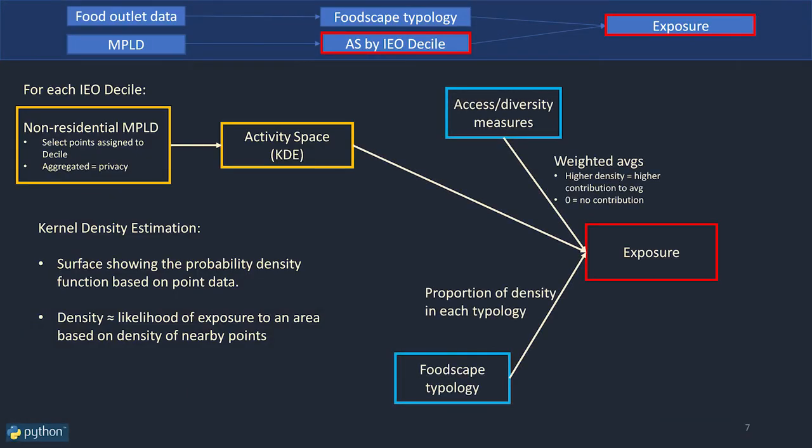Once we had those activity spaces, we calculated exposure in two ways: first, by calculating weighted averages of the accessibility and diversity measures using the kernel density as the weights; and second, by calculating the proportion of the total density that fell within each of the foodscape typologies.